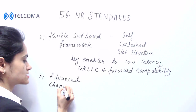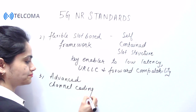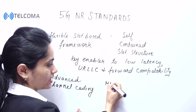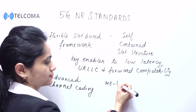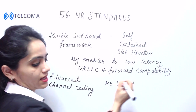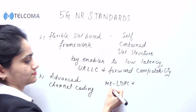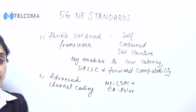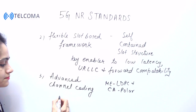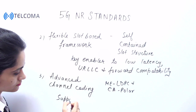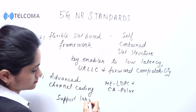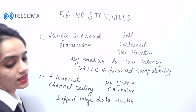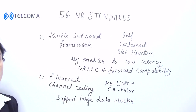Next we have advanced channel coding. Channel coding in 5G NR uses LDPC and Polar codes. LDPC efficiently supports large data blocks, while Polar codes support reliable control channel transmission.